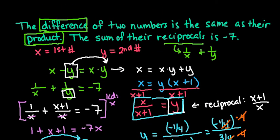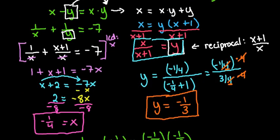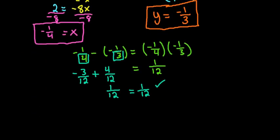Remember the second equation said the sum of the reciprocals is negative 7. The reciprocal of negative 1 fourth is negative 4, and the reciprocal of negative 1 third is negative 3. Negative 4 plus negative 3 equals negative 7, so our solution worked.